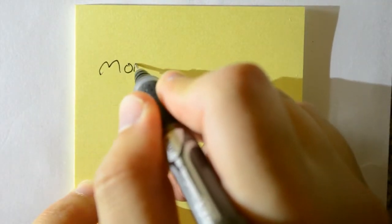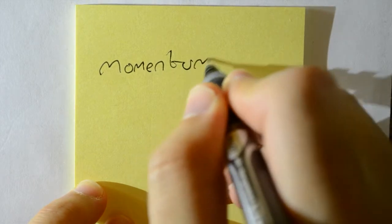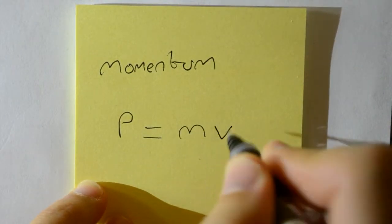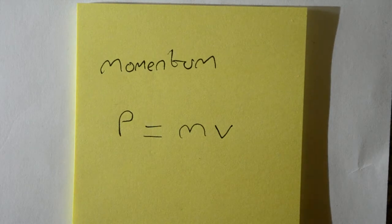To explain what's going on here we need to use two key concepts. The first we're going to use is conservation of momentum. Momentum is defined as the product of mass and velocity of an object.